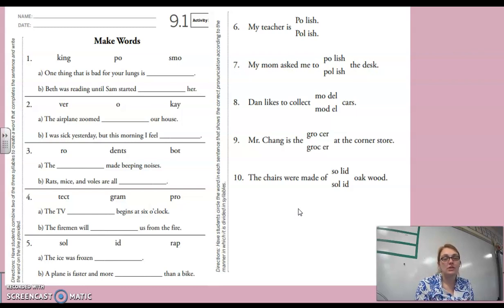So letter or number one, A. One thing that is bad for your lungs is blank. So you're going to put the words together. Is it going to be poking or smoking? One thing that is bad for your lungs is smoking. So you're going to have the S-M-O go in front of the K-I-N-G to make the word smoking.